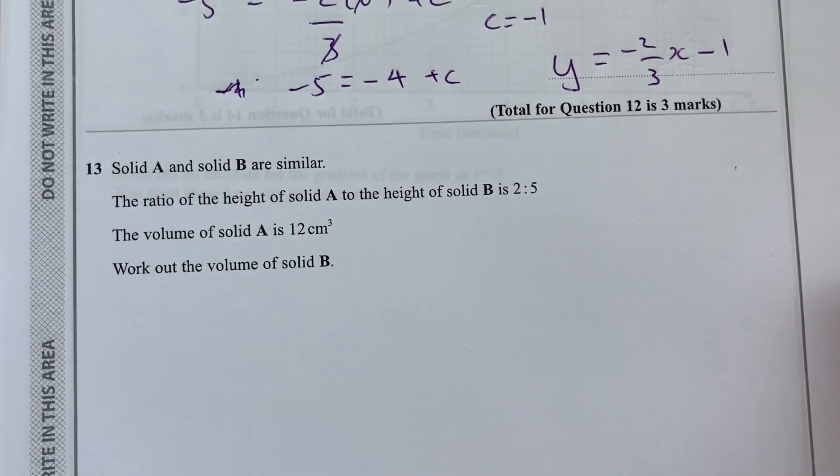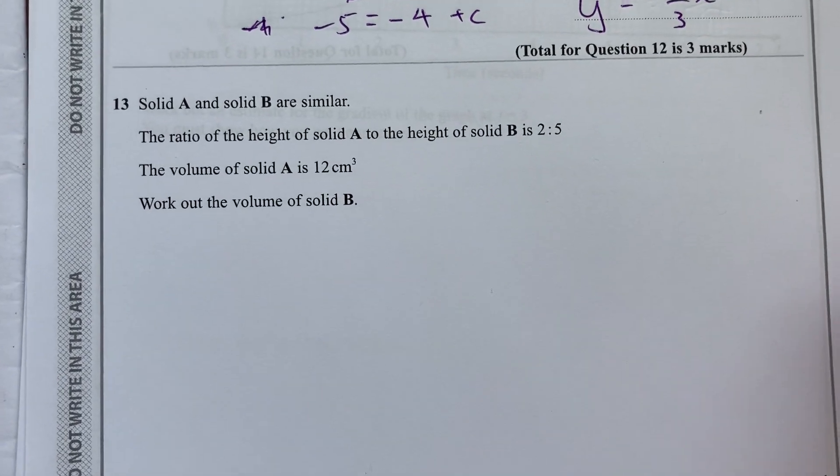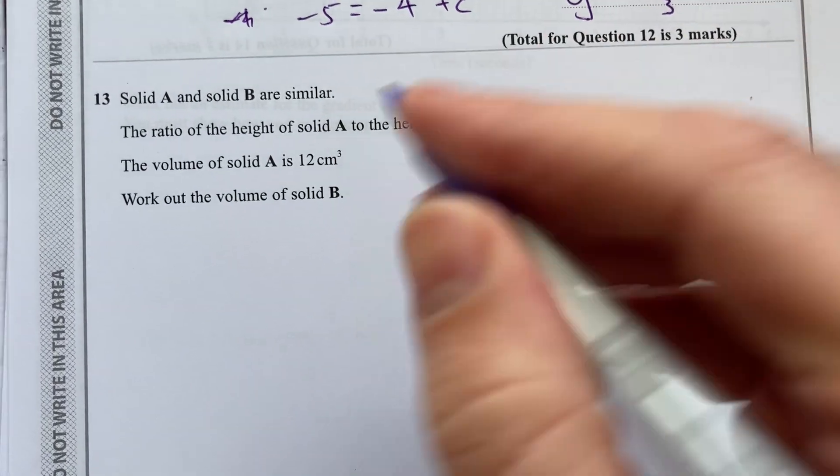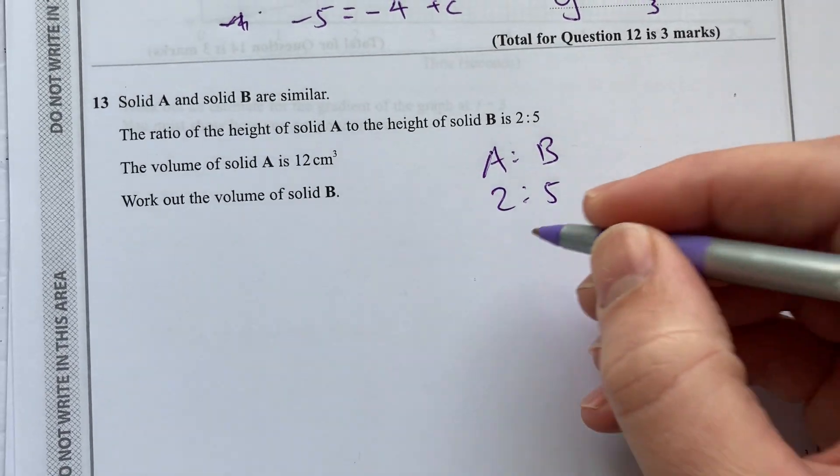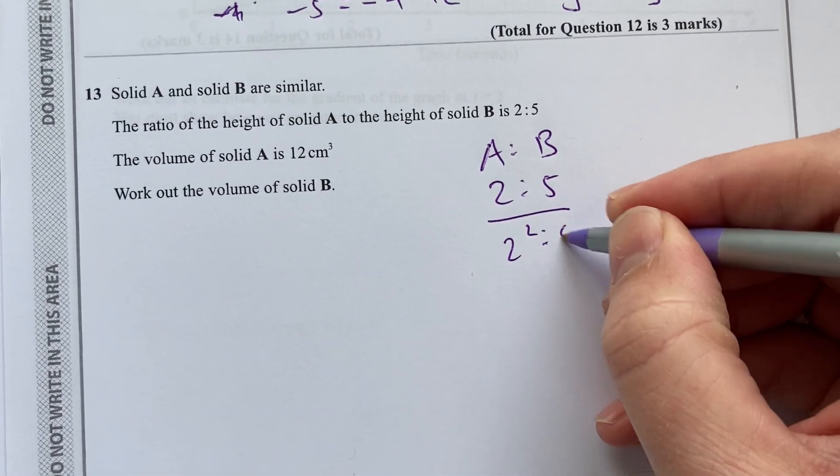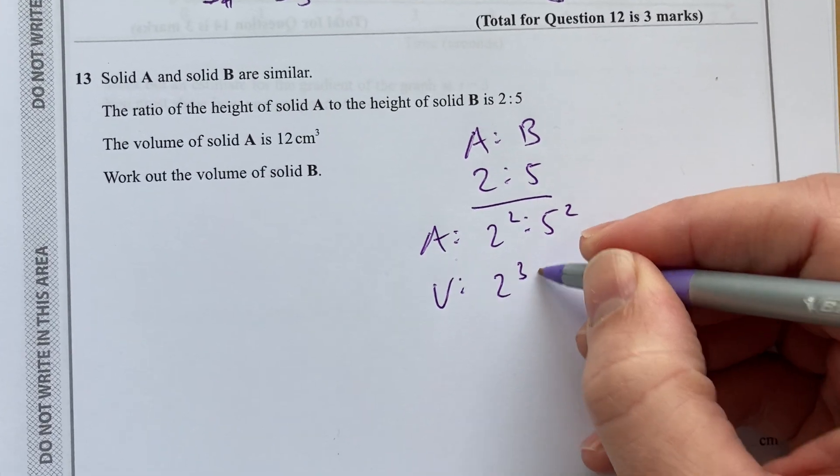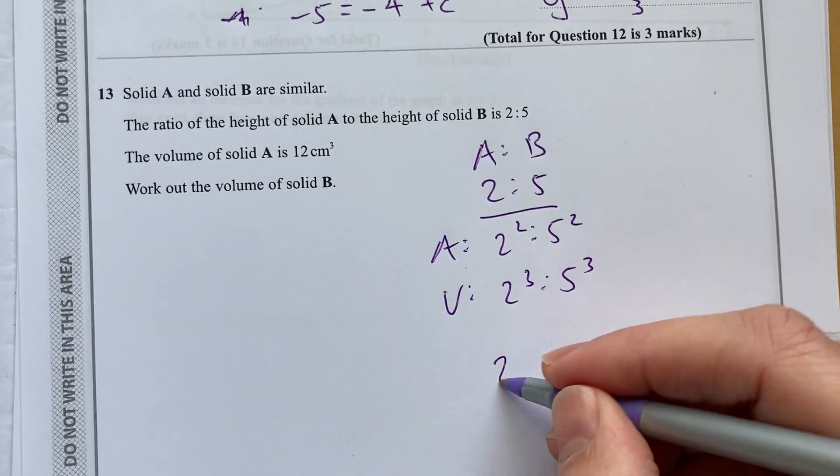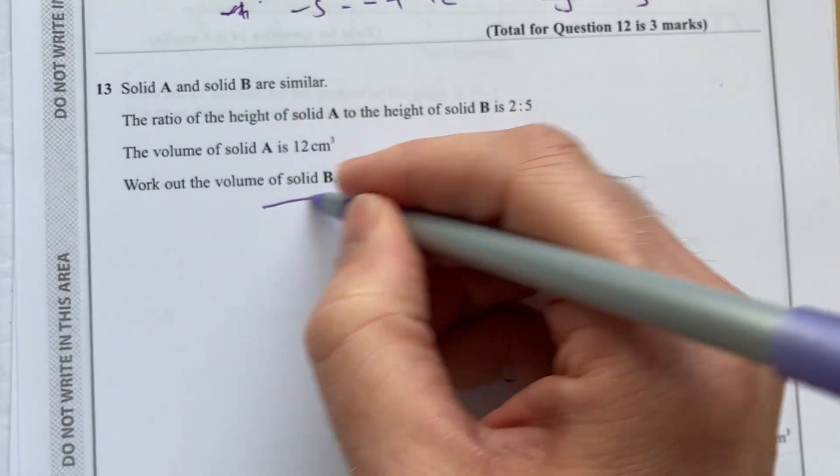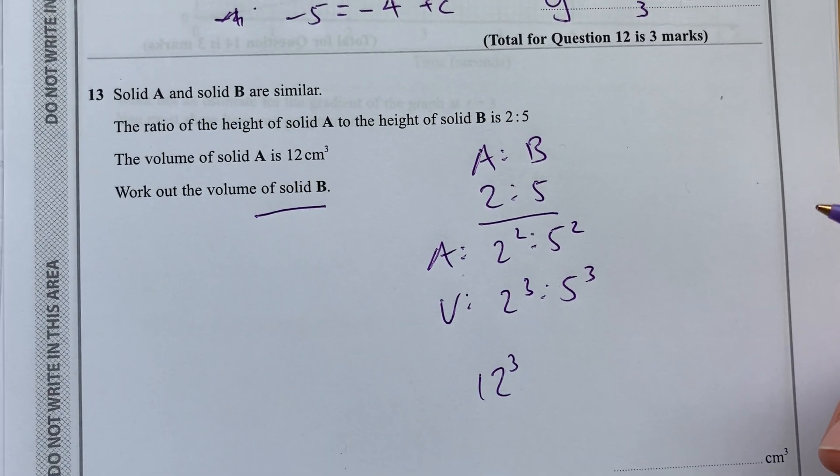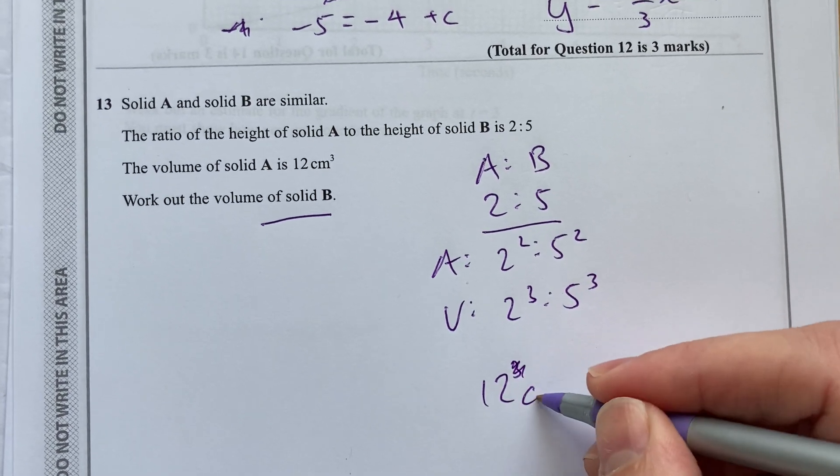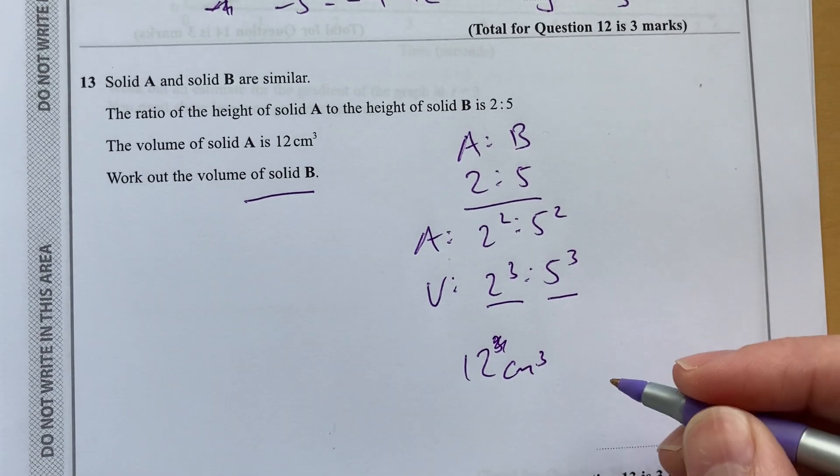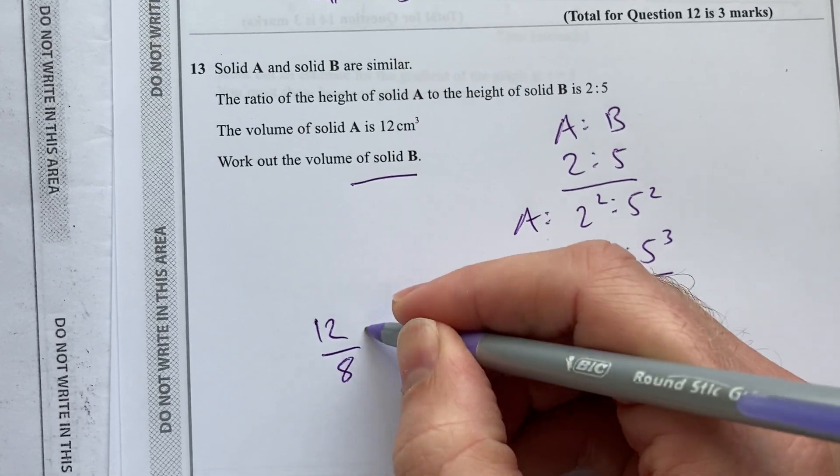Last question for this video. Please do follow on onto the next video to watch the last nearly 10 questions. A to B have a ratio of height 2 to 5. So, we know that their area would be 2 squared to 5 squared. And their volume would be 2 cubed to 5 cubed. The volume of solid A is 12 cubic centimeters. So, we're going to work out the volume of solid B. So, what we need to do there is divide 12 by 8 and multiply it by 125.